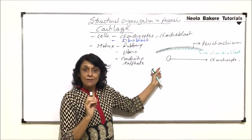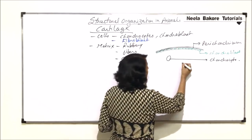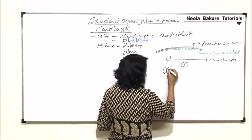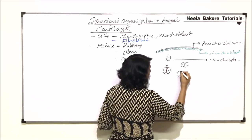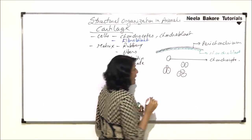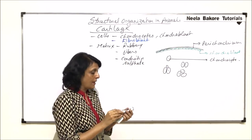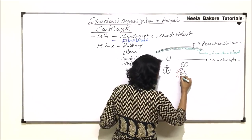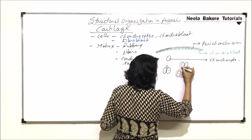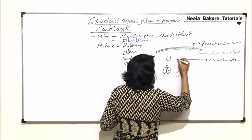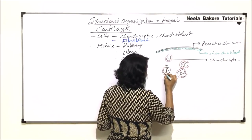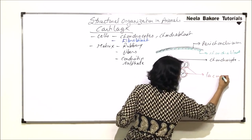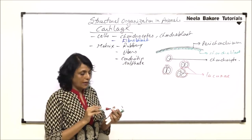These chondrocytes may be single or in groups. They can be two cells together, three cells together, or more than three cells together. All these chondrocytes are placed in a space.